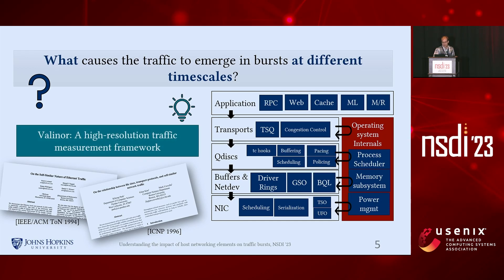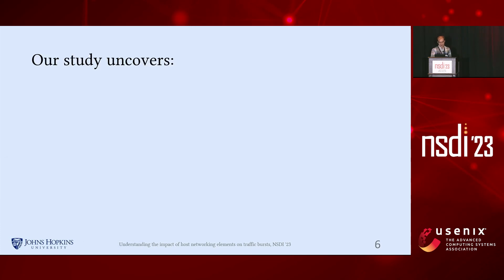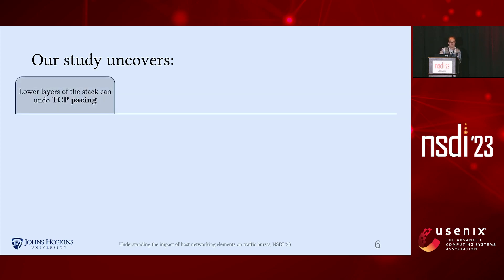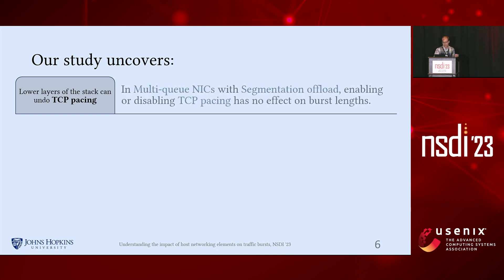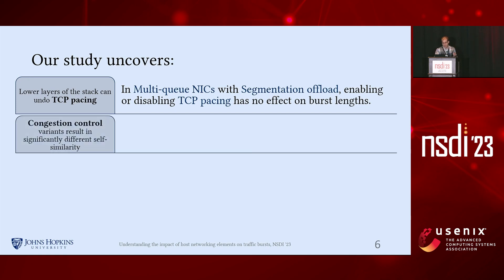We introduce a high-resolution traffic measurement framework that attempts to answer this question. Our system uncovers interesting new insights about the dynamics of bursty network stacks, such as how lower layers of the stack can compromise the shaping efforts of the software. For example, when using a commodity multi-queue NIC with TCP segmentation offloading support, we see no change in burst length when we enforce TCP pacing.